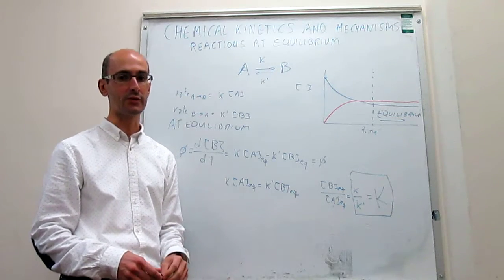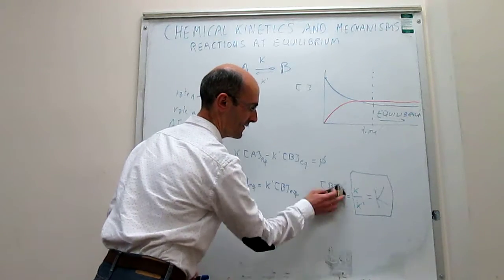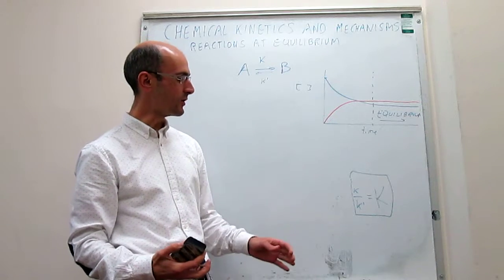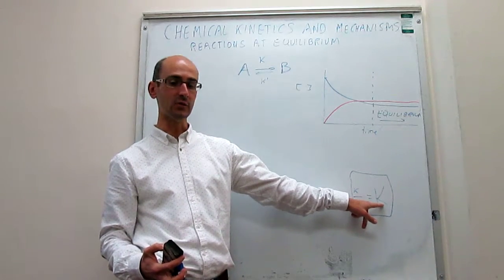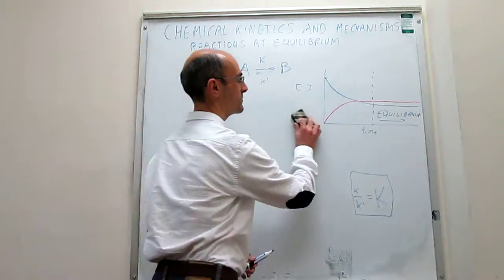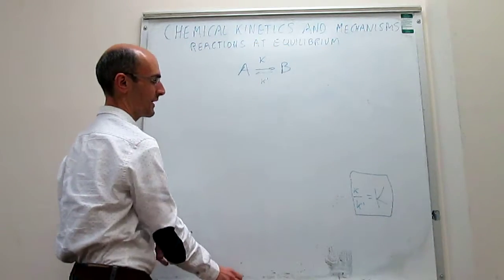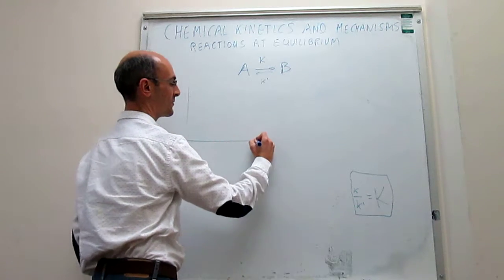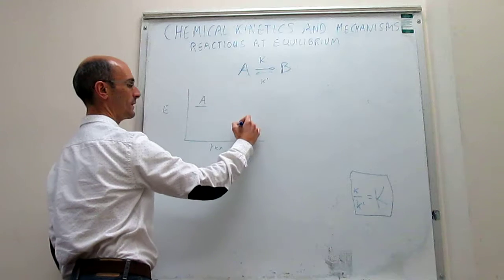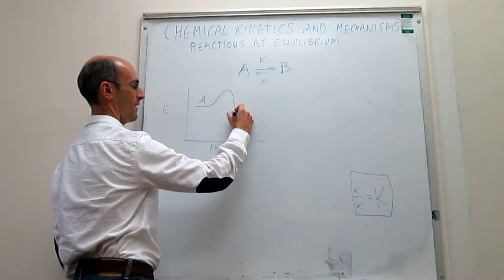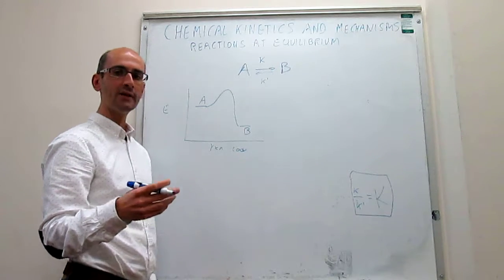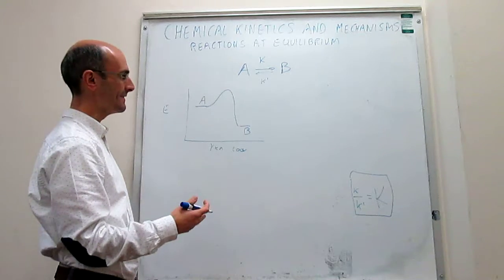To reinforce that these two things are related, one of the things we can do is see how all of this is affected by temperature. We learned in thermodynamics that the equilibrium constant changes with temperature according to Le Chatelier's principle, and we also know that rate constants change with temperature according to the Arrhenius expression. Let's draw the energy diagram for this reaction and assume that the reaction is exothermic. That means you liberate energy as you go from A to B.